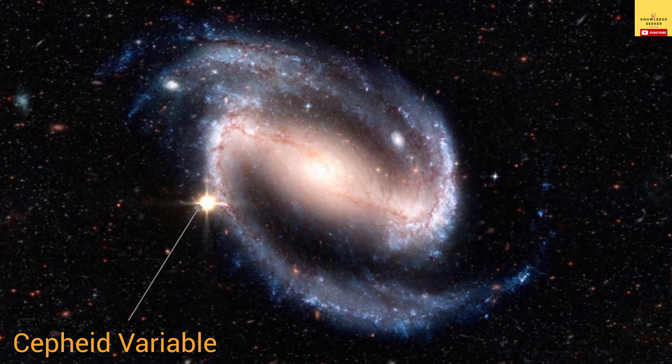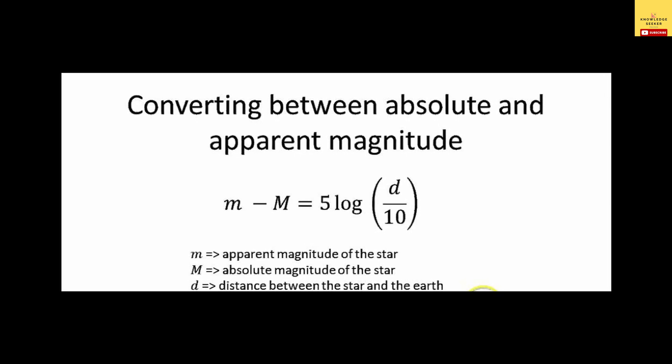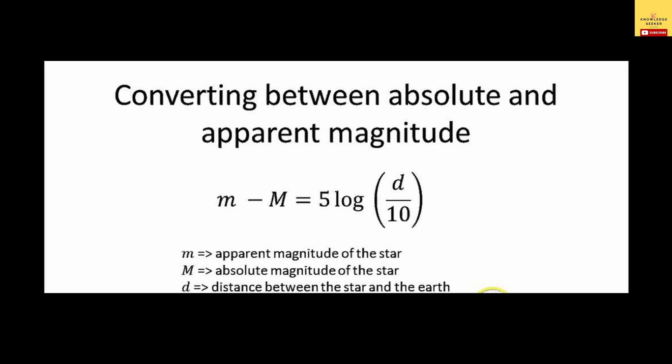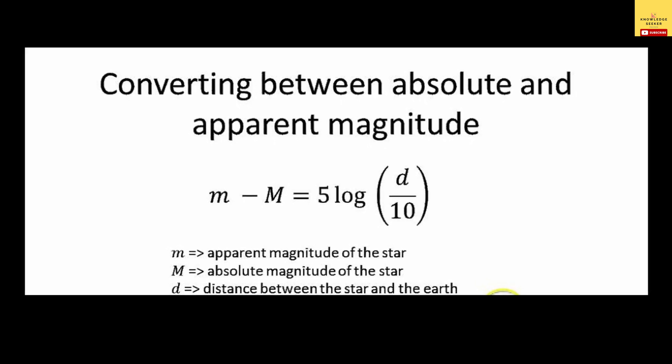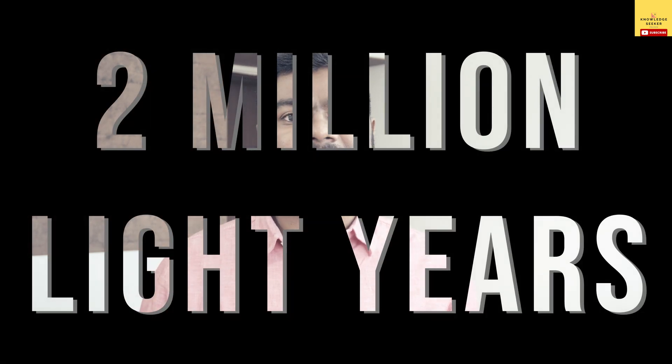Since we know the absolute luminosity of any Cepheid variable star, if we are trying to figure out the distance to any celestial object, we can observe a Cepheid variable star close to that object — for example, one or multiple Cepheid variables within a target galaxy. Using the relationship between the absolute luminosity and apparent brightness on Earth, we can figure out the distance to that Cepheid variable star and hence the distance to that galaxy. This was a giant leap in our ability to figure out distances in the universe, allowing us to measure distances up to 2 million light years.